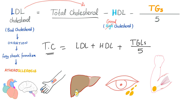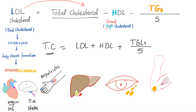Why is LDL the bad cholesterol? Because it can lead to oxidation, fatty streak formation, atherosclerosis, angina, myocardial infarction, TIA and stroke. Angina in your heart is equivalent to TIA in your brain — both are ischemia — while infarction in the heart is myocardial infarction and infarction in the brain is a stroke. It can also lead to peripheral vascular disease, cholesterol gallstones, xanthelasma, tendon xanthomas, and retinal lipid deposits.